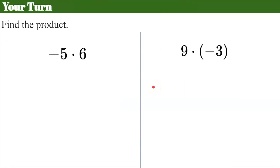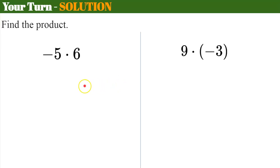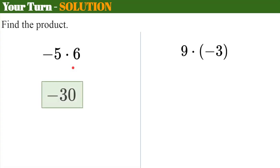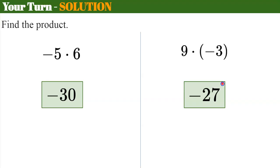Your turn — pause, find the products, and come back when you're ready. Welcome back. For the first example, two different signs, so I know my product will be negative: 5 × 6 = 30, so the answer is negative 30. For the second, two different signs again: 9 × 3 = 27, so the product is negative 27.